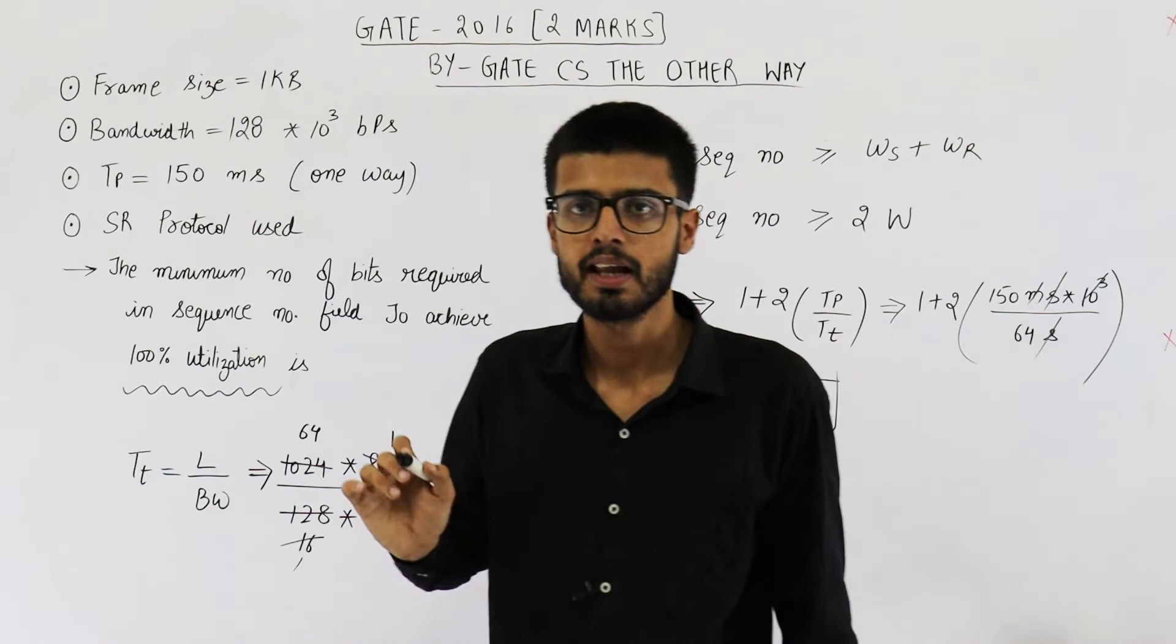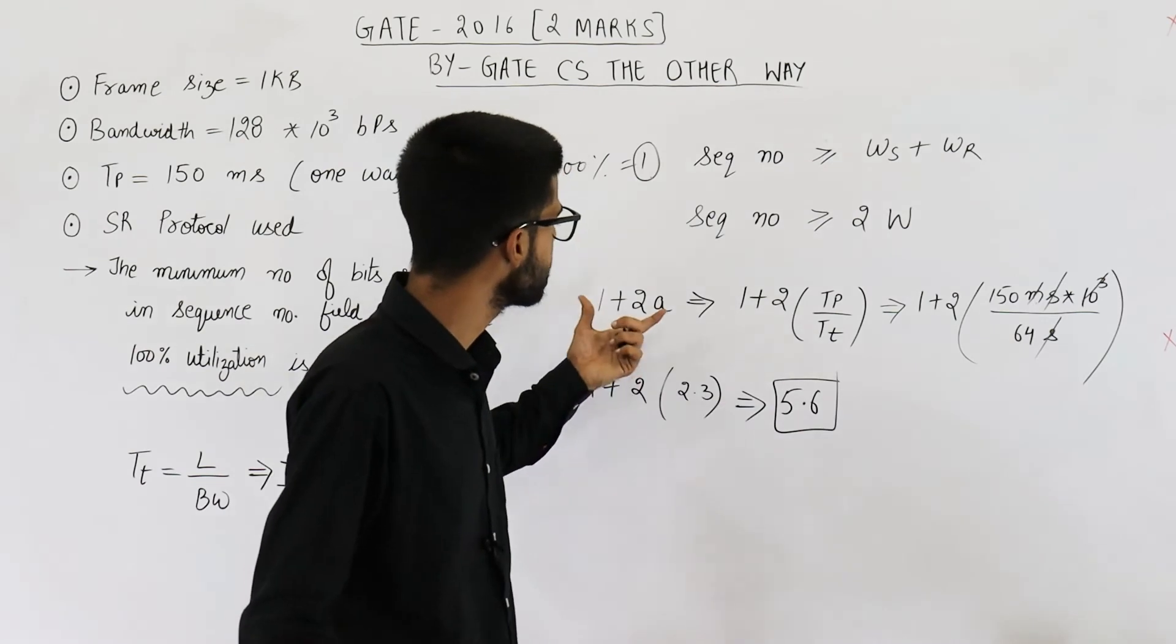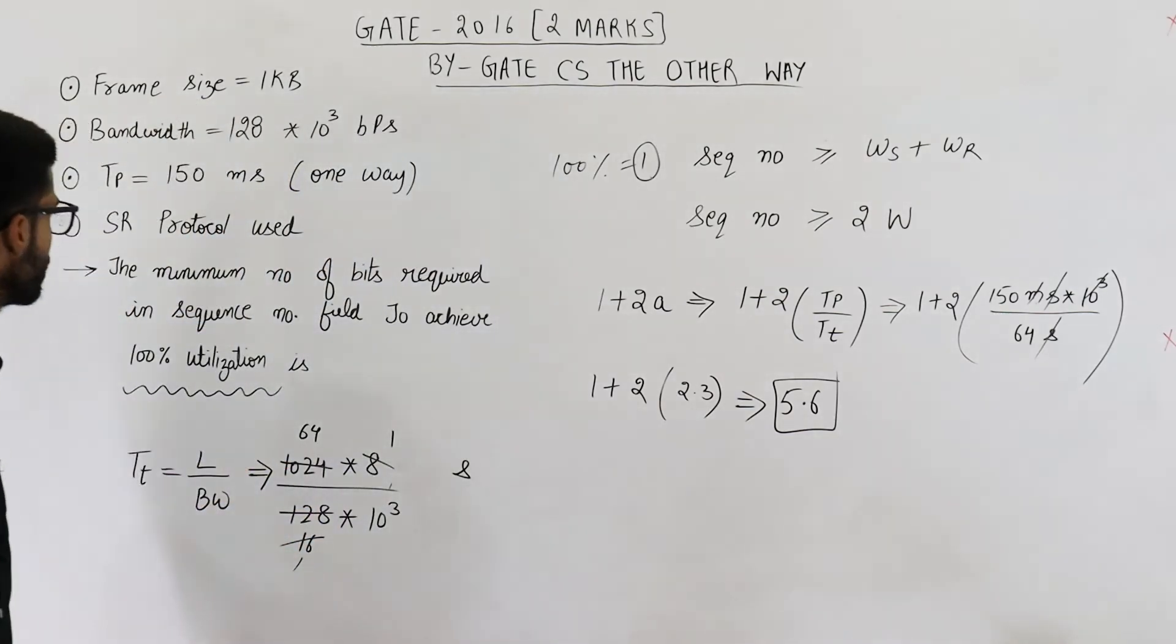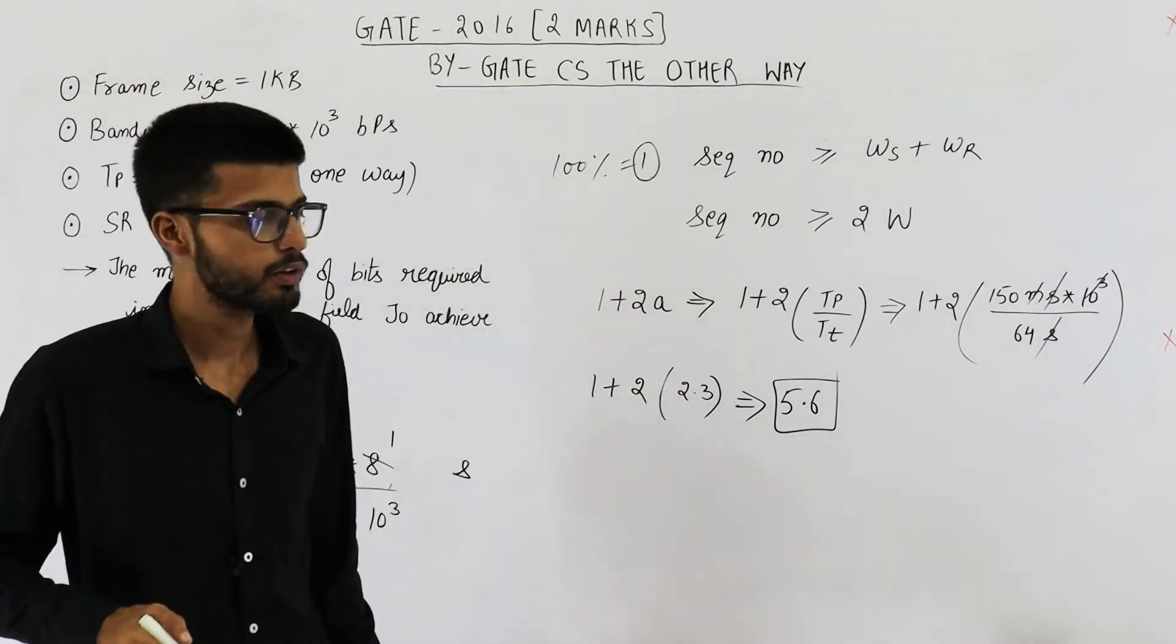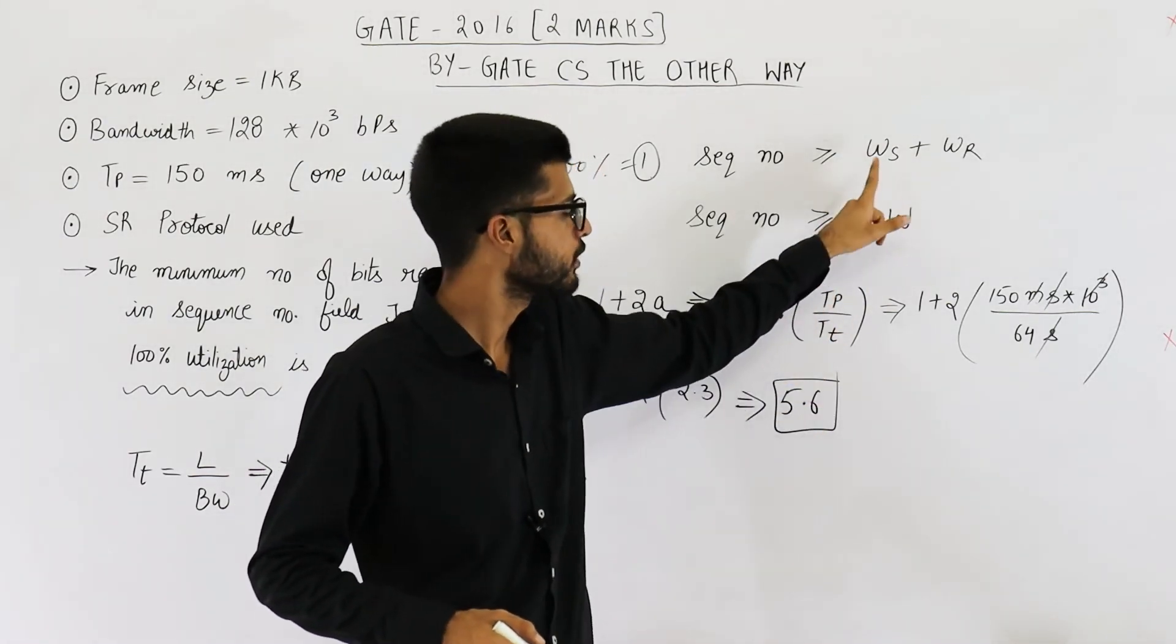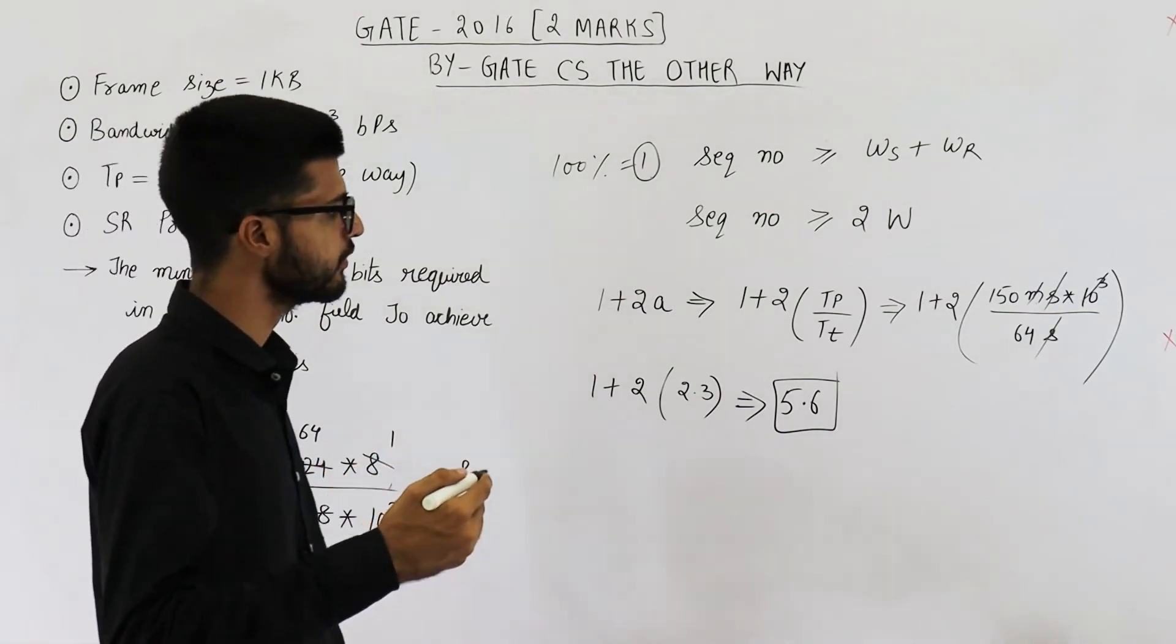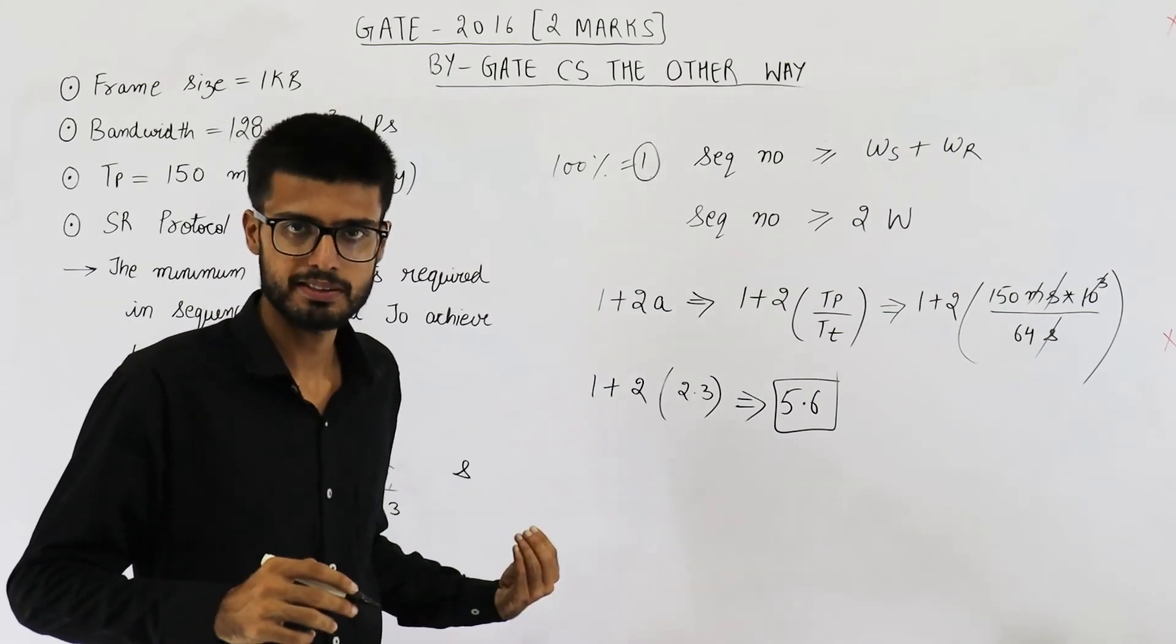In case of sliding window protocol, if you need 100% utilization, the value of sender window size must be 1 plus 2a. That means this much. Sliding window protocol can be of two types: Go-Back-N or SR. Here we are implementing SR. In SR, sender window size and receiver window size is equal. So both of these will be equal to 5.6 only. So sender window size is 5.6. Receiver window size is also 5.6. Now actually sending 5.6 packets means you will require 6 sequence numbers for one side.